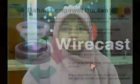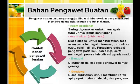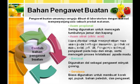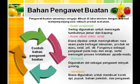Bahan pengawet buatan merupakan bahan yang umumnya sengaja dibuat di laboratorium dengan maksud memperpanjang usia sebuah produk makanan. Contohnya ada asam propionat yang sering digunakan untuk mencegah tumbuhnya jamur dan kapang; asam sitrat atau citric acid yang biasa dipakai untuk meningkatkan rasa asam pada produk air, susu, selai ataupun jeli; benzoat yang biasa digunakan dalam pengawet minyak goreng; dan sendawa yang biasa digunakan untuk membuat pupuk, bahan peledak, dan pengawet.